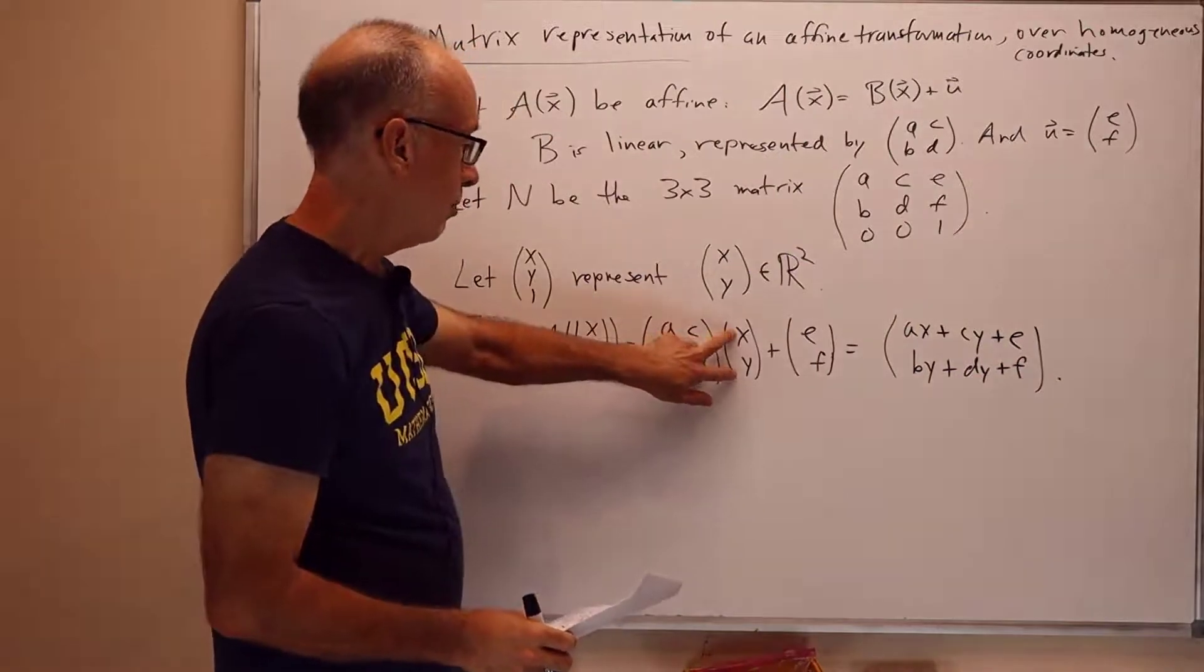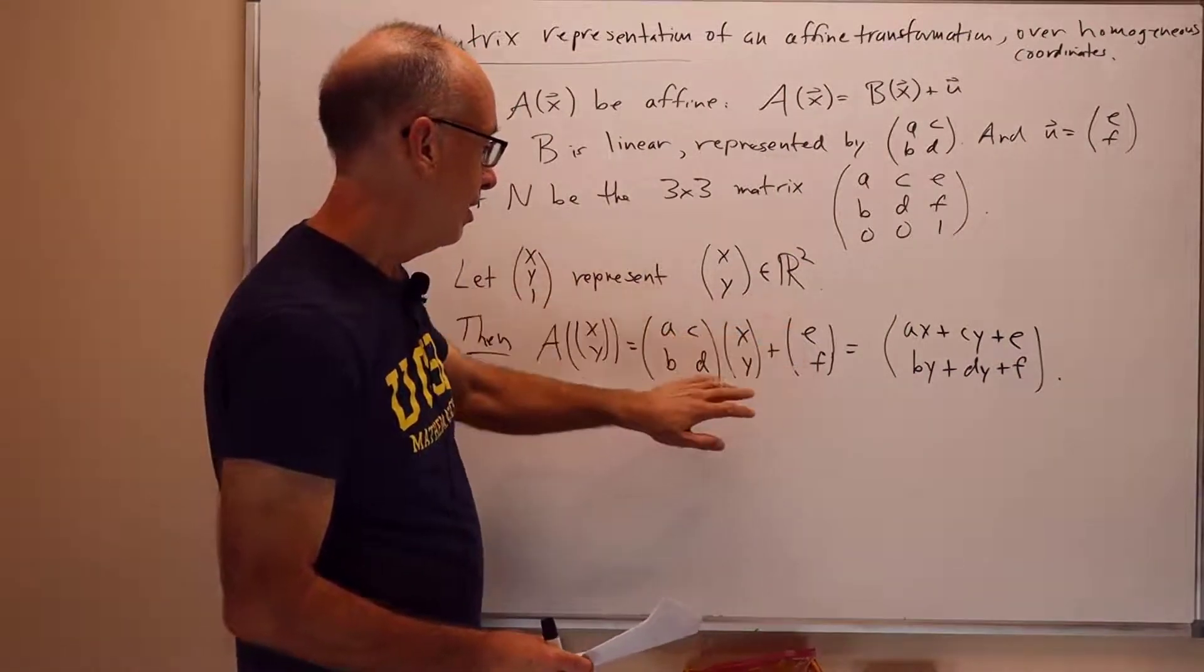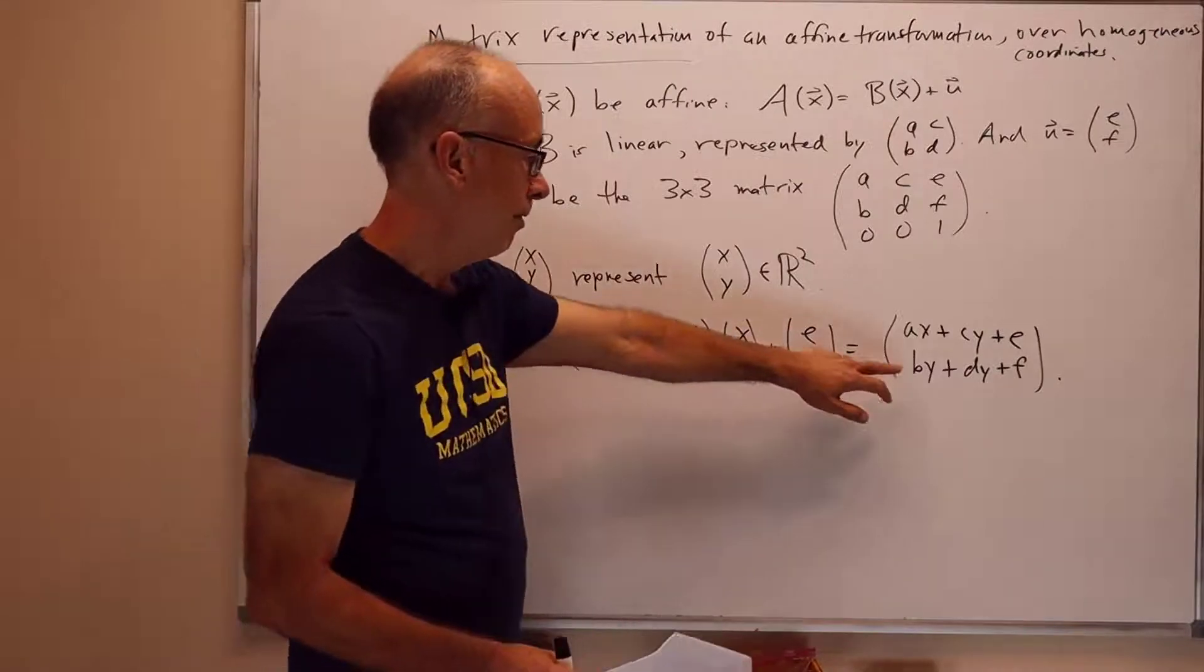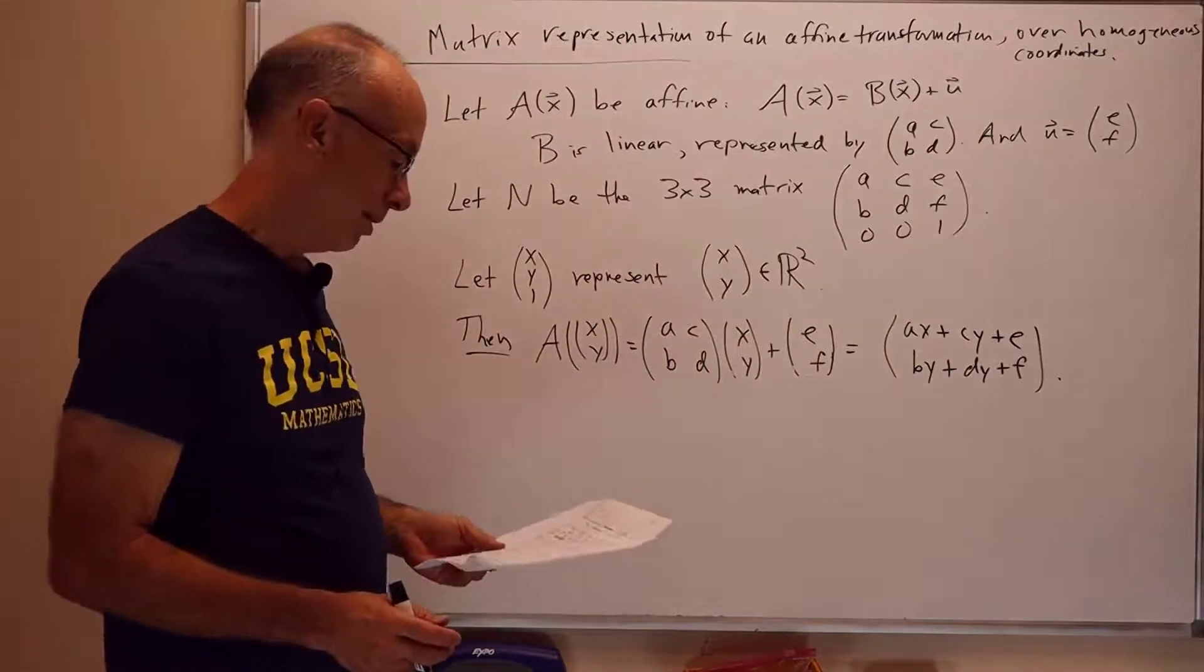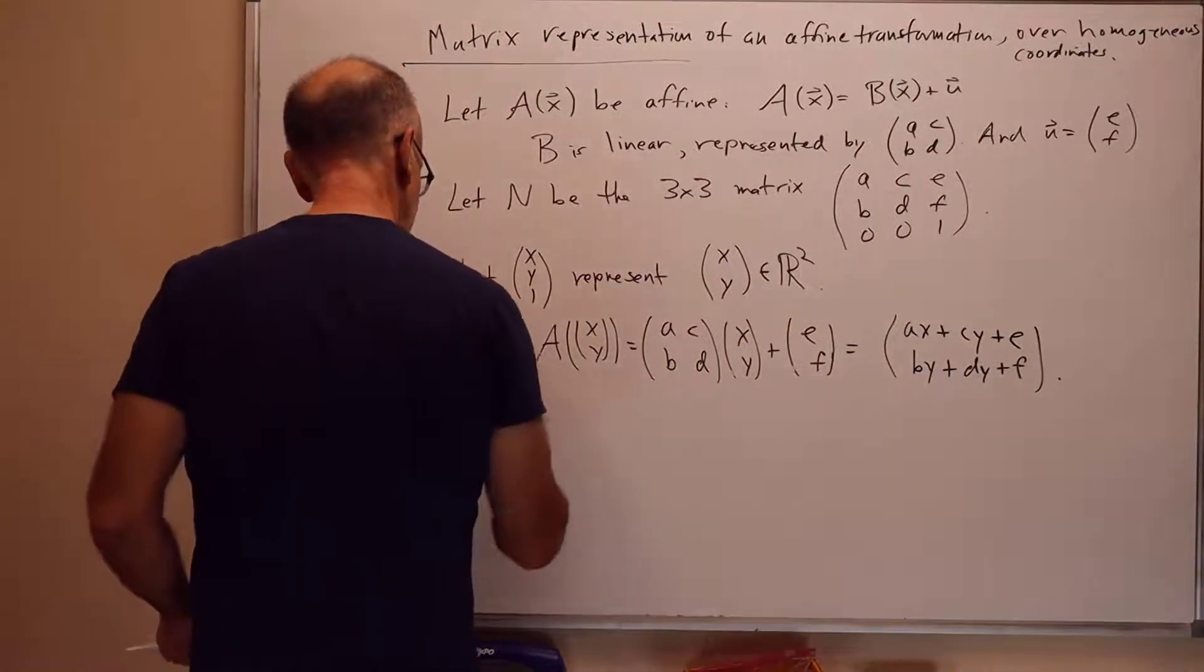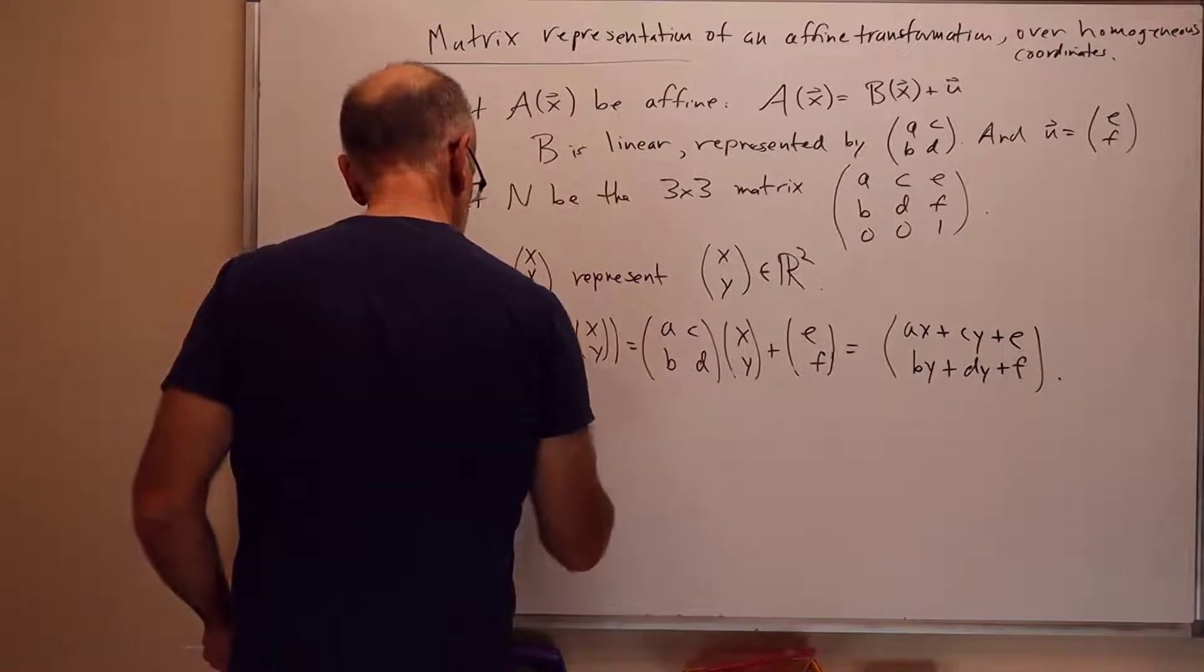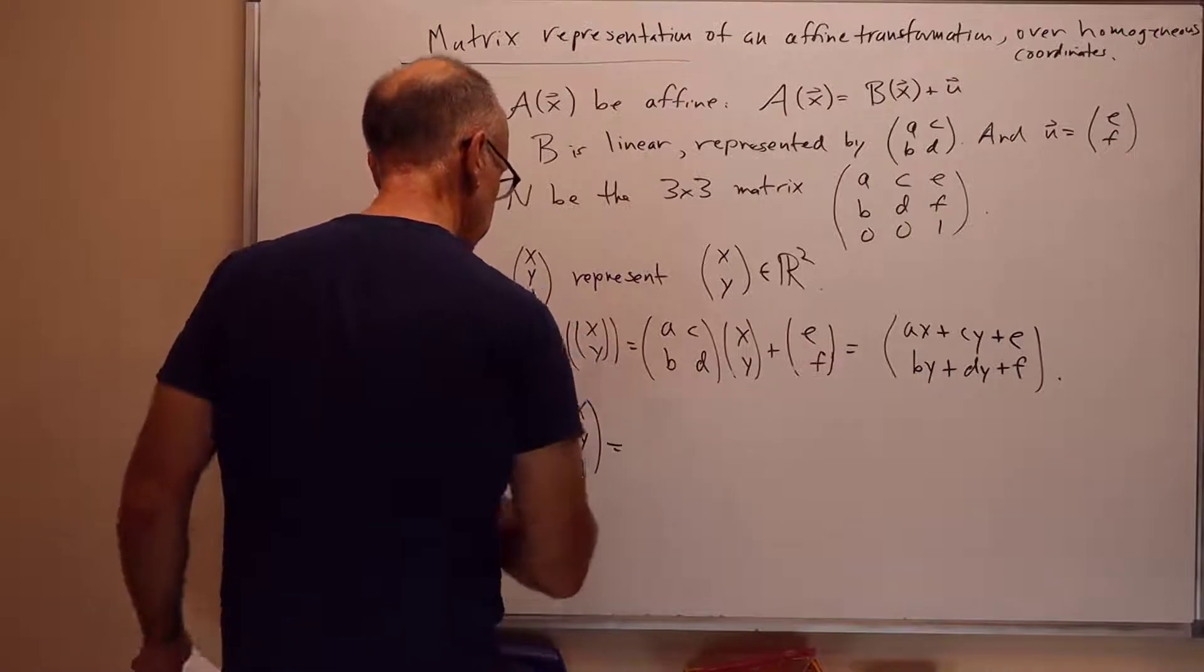When we multiply that out, we get Ax plus Cy plus E as the first component, the x component of the image. And Bx plus Dy plus F as the y component. So, we just took x, y inner product with AC plus the E and then x, y inner product with BD plus the F.